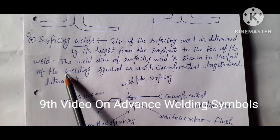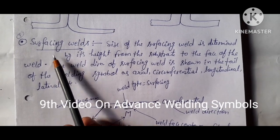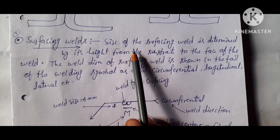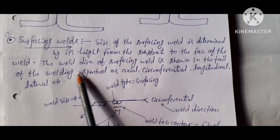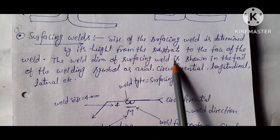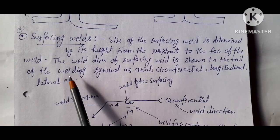Now friends, this is the ninth video on advanced welding symbols. We're talking about surfacing welds. The size of the surfacing weld is determined by its height from the substrate to the face of the weld.